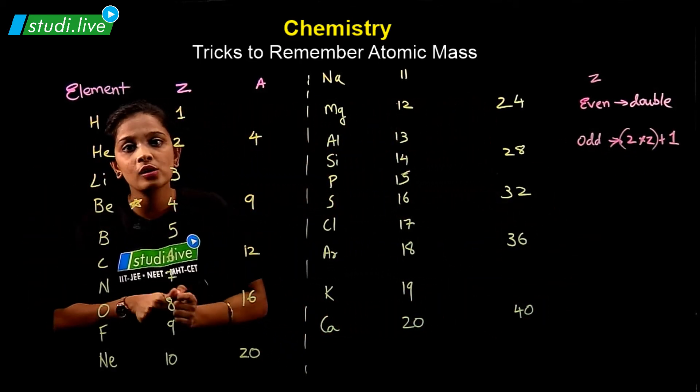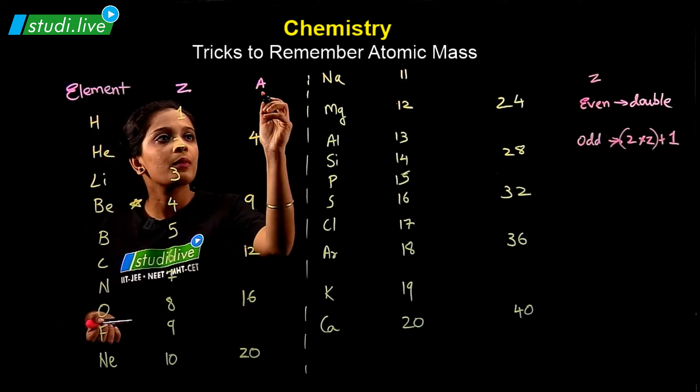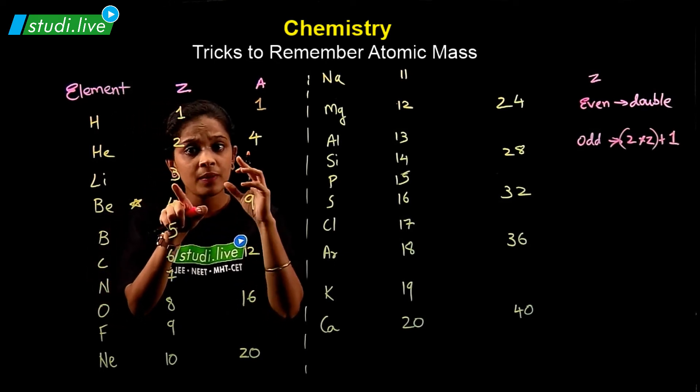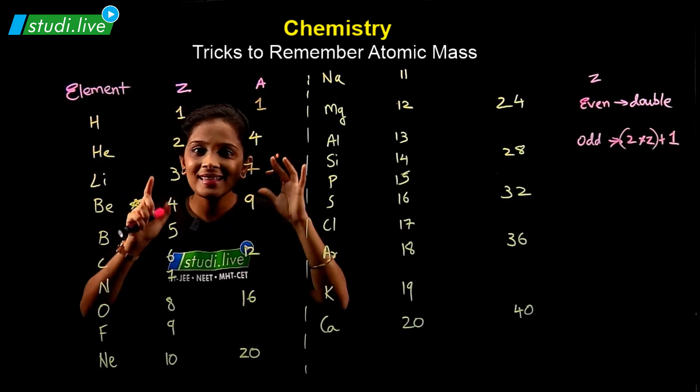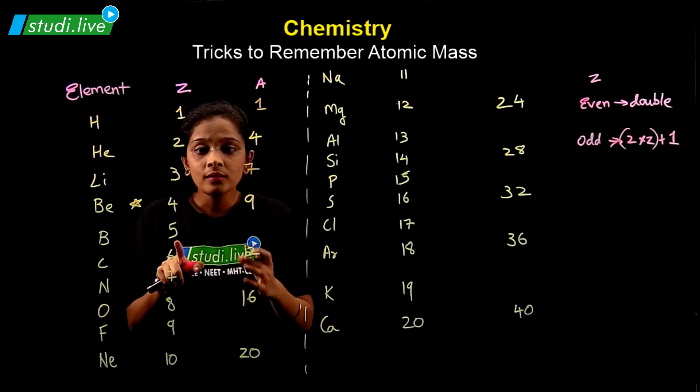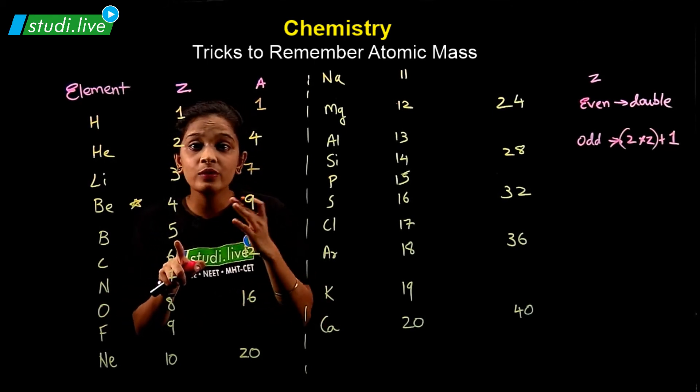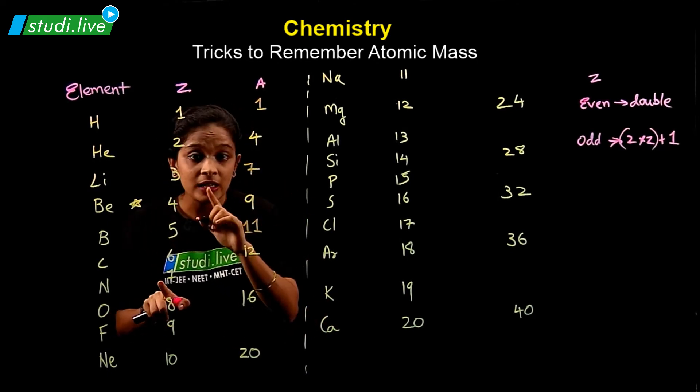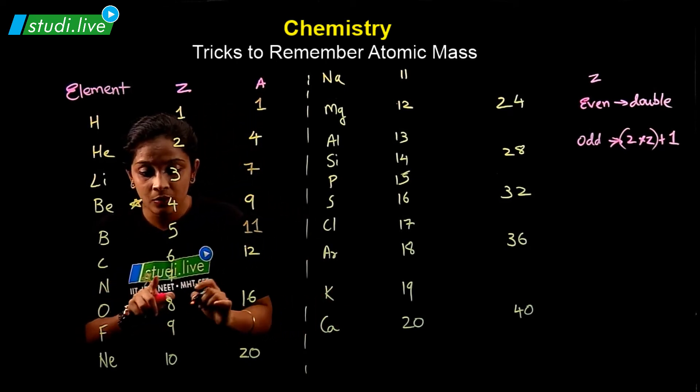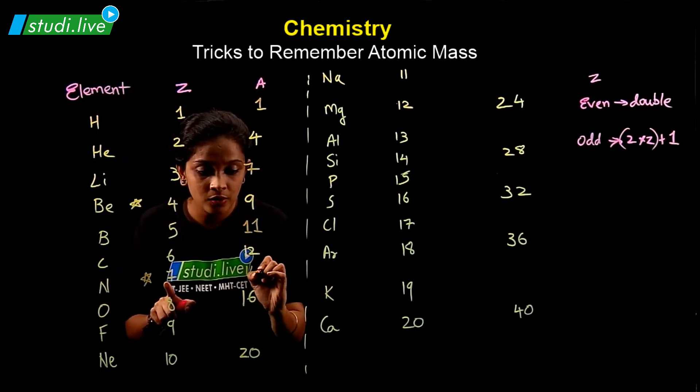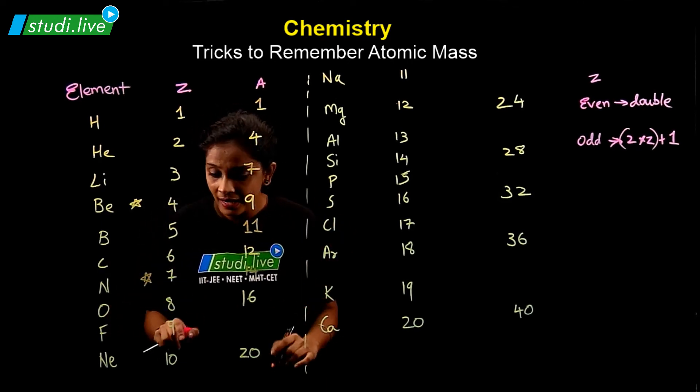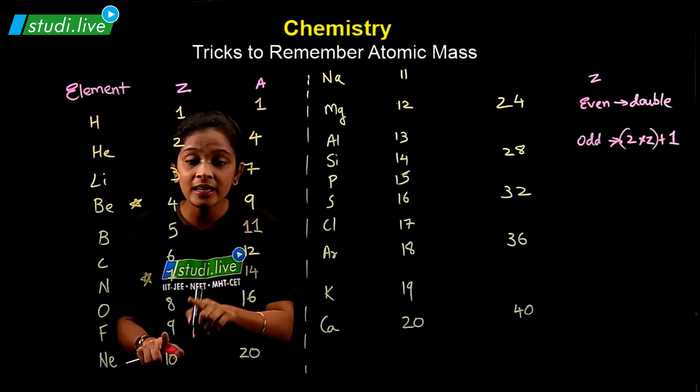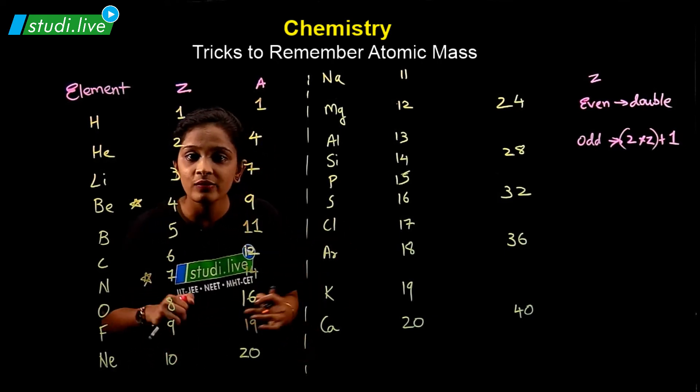Hydrogen is an exception. Hydrogen atomic number and atomic mass both are same, that is one only. Lithium, three twos are six plus one, answer is seven. Boron, that is five. Five twos are ten plus one, eleven. Okay, nitrogen is an exception, student. Nitrogen exception, it's fourteen is the answer. You need to remember. Exception, I'm putting the asterisk. For fluorine, nine twos are eighteen plus one, nineteen. Definitely is the case.